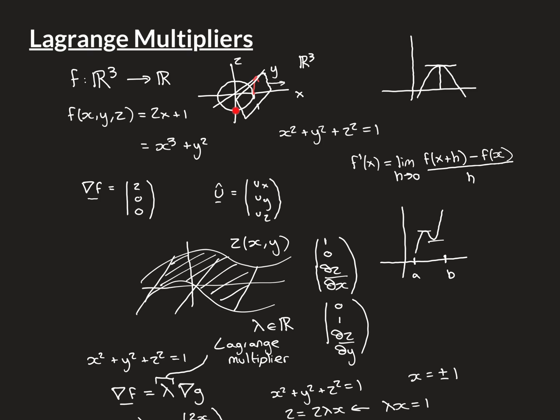At the point (0, 0, -1), the function is again 0. At the point (0, -1, 0), the function gives the value 1. And at the point (-1, 0, 0), the function value is minus 1.